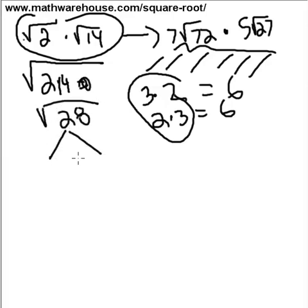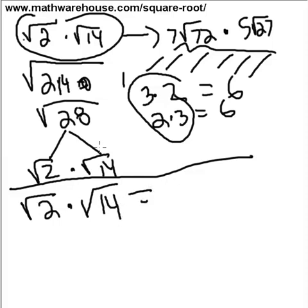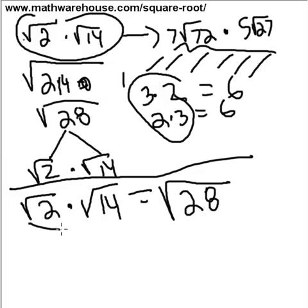Another key property: the square root of 2 times the square root of 14 can be rewritten as the square root of 2 times 14, or the square root of 28. Likewise, you could break the square root of 28 back out into the square root of 2 times the square root of 14. Those are two important properties to remember. So if you're supposed to multiply the square root of 2 times the square root of 14 and express your answer in simplest radical form, let's use this property and rewrite it as the square root of 28.